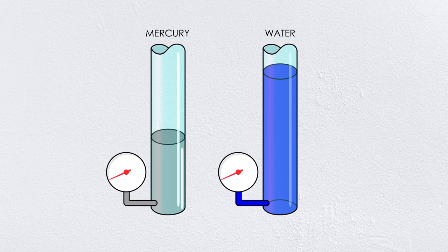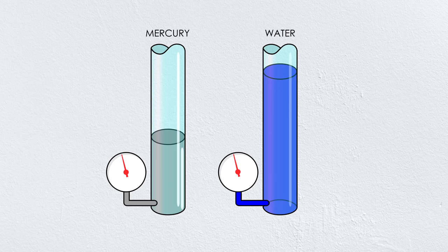For a given pressure, a denser fluid like mercury will have a lower head compared to a lighter fluid like water because they have different unit weights. A good example of measuring pressure head is a barometer.